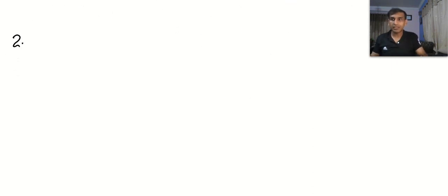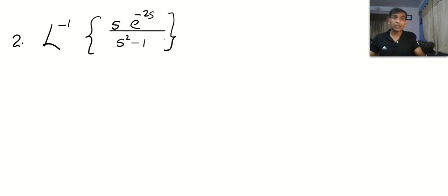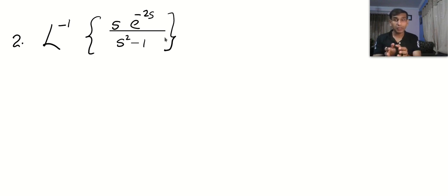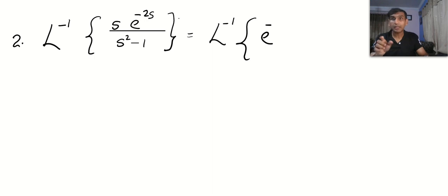Let us check one more problem. Find the Laplace inverse of s·e to the power minus 2s divided by s squared minus 1. In an examination, if they ask such questions you should not be shocked. Here we have to apply the inverted version of the second shifting theorem — the presence of that e to the power term tells you so. Write this as e to the power minus 2s multiplied by s divided by s squared minus 1.